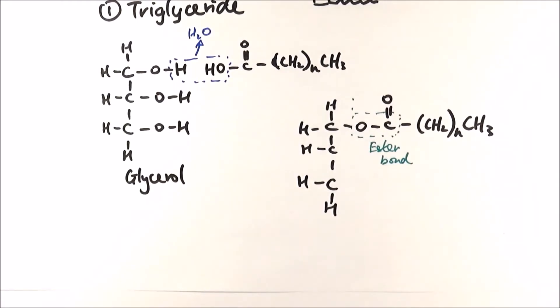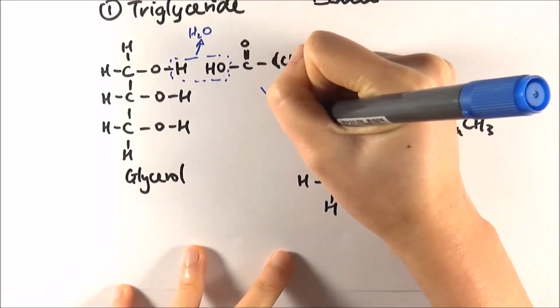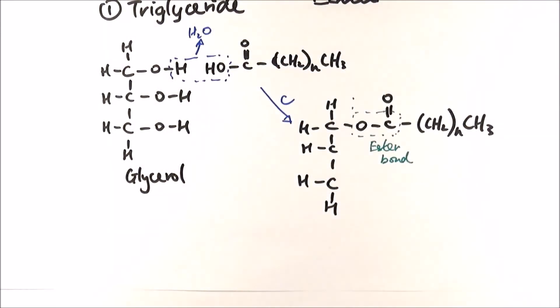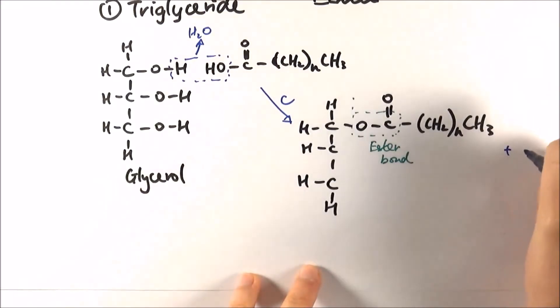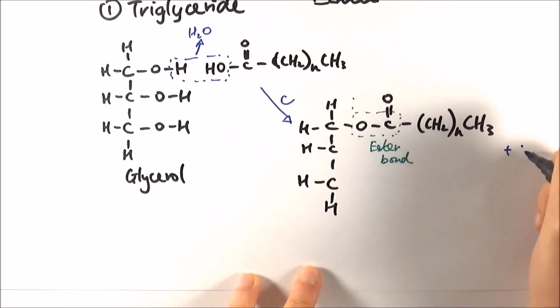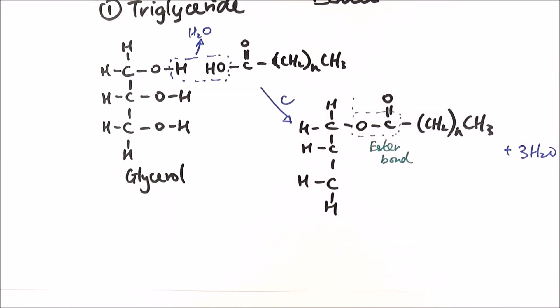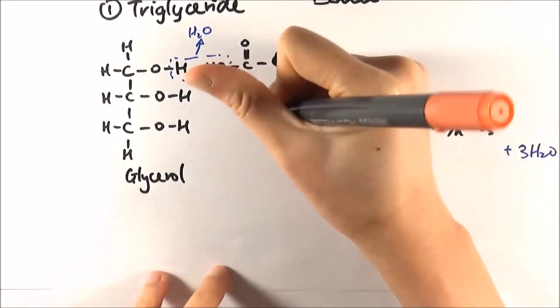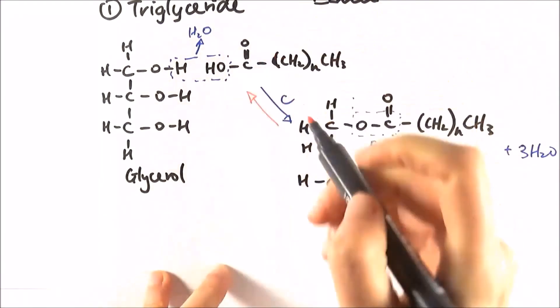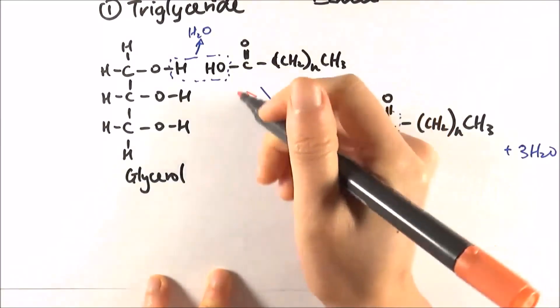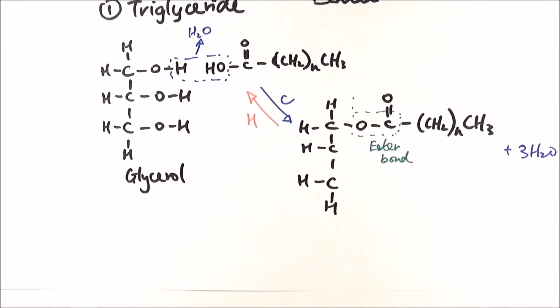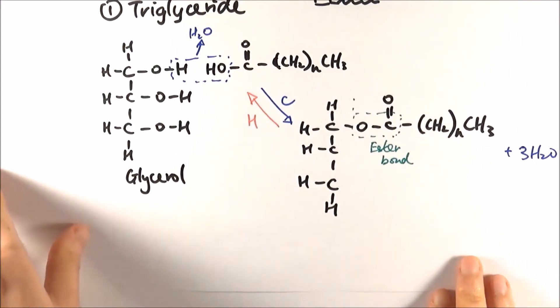This reaction is called the condensation reaction because it makes a water molecule. Technically speaking, there should be three water molecules here because you make two more bonds, so there will be three ester bonds. If you reverse the reaction using three water molecules, you can break them down into one glycerol and three fatty acids again. That's hydrolysis, same as in carbohydrates. And that's triglyceride.